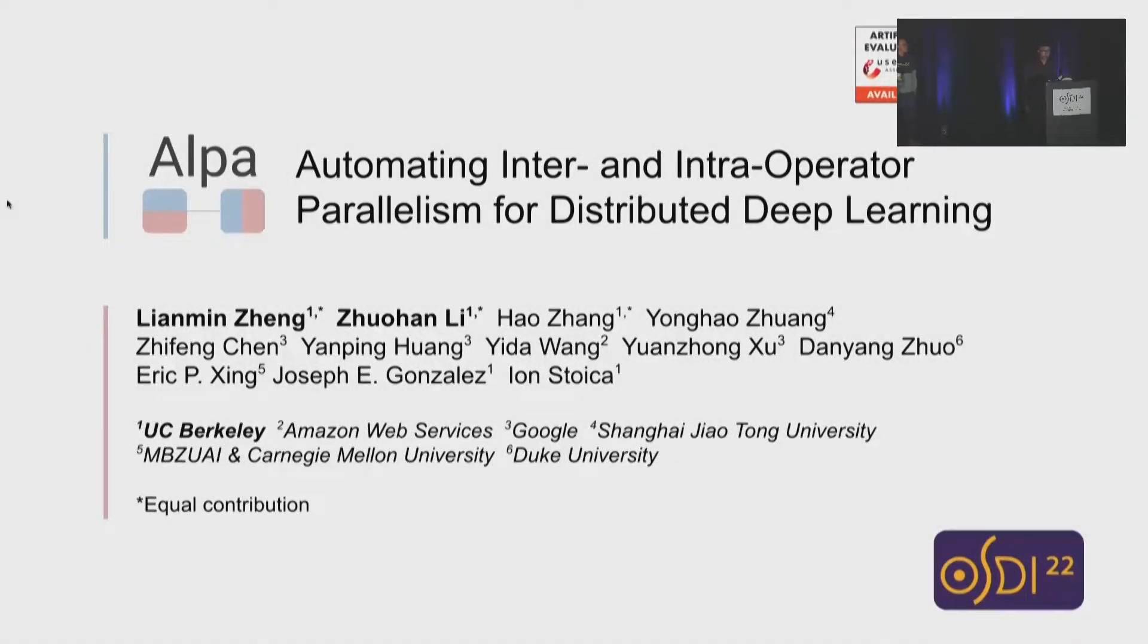A system we built to automate the model parallel training of large neural networks. This project is a collaboration between UC Berkeley, AWS, Google, and all other institutions listed here.